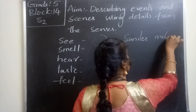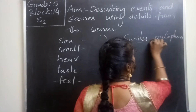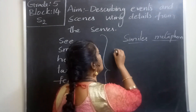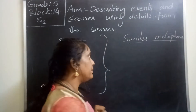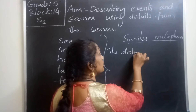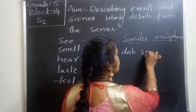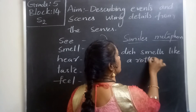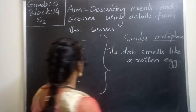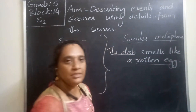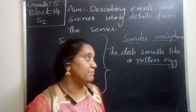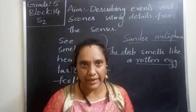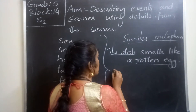When we take these senses along with comparison — that is, with similes and metaphors — you know what similes are. If I want to describe the smell of something, I can say it 'smells like' something. For example: 'The dish smells like a rotten egg.' Here I am comparing the dish with a rotten egg. A rotten egg has a very pungent, bad smell, so this tells us the dish is spoiled.